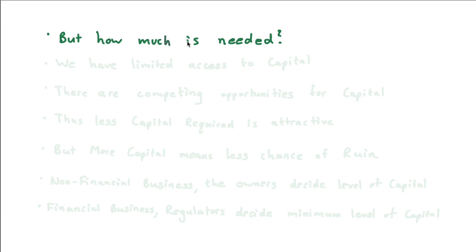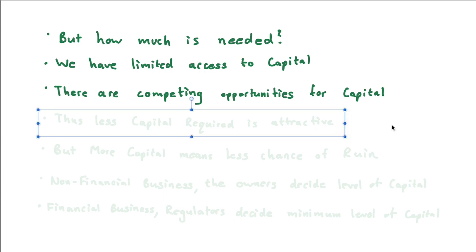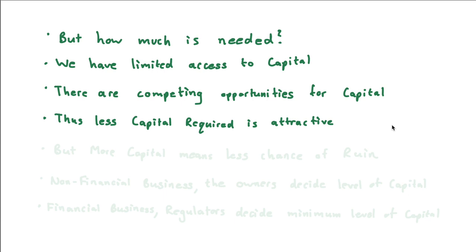The big question is: how much capital is actually needed? This is the question that actuaries and other analysts really spend a lot of time thinking about. We could say the more capital we have, the less chance of ruin, so let's hold as much capital as possible. But the realities are: we have limited access to capital — we live in a capitalistic society where capital is very much scarce — and there are lots of competing opportunities for capital. Investors are actually looking for businesses that require less capital, as that results in a higher expected return.